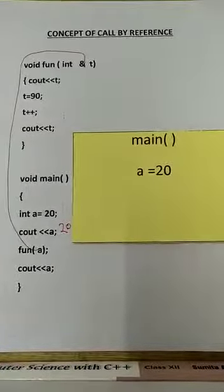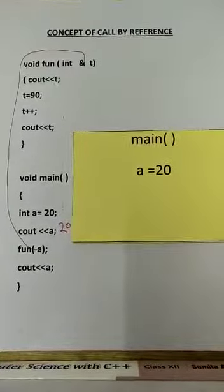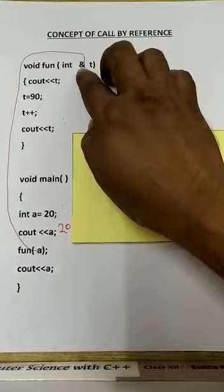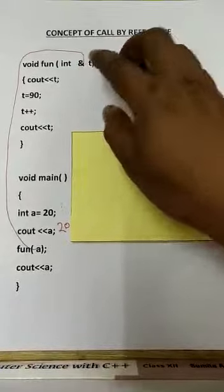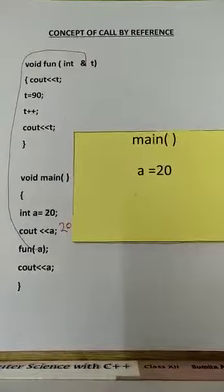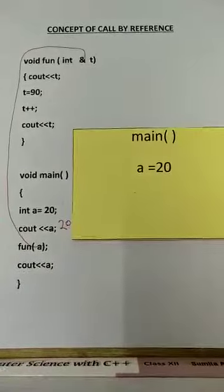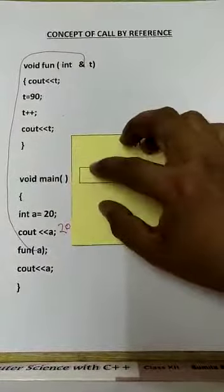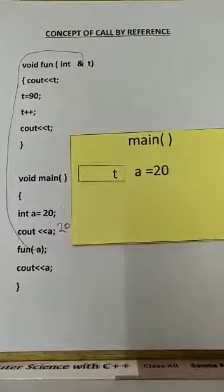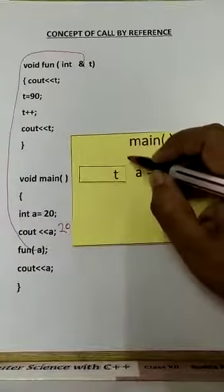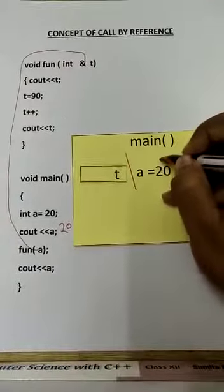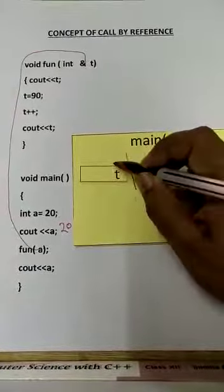A new variable will be created, t. But in front of t we see a symbol of ampersand, due to which it becomes a call by reference. Hence, a and t represent the same memory location. That is, one memory location with two names, a and t.